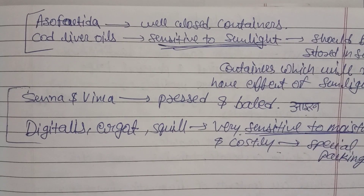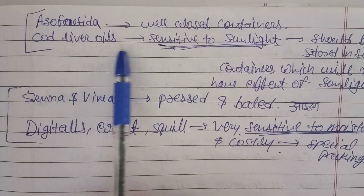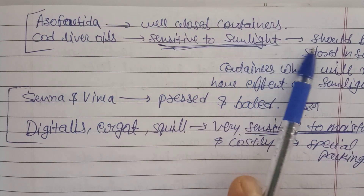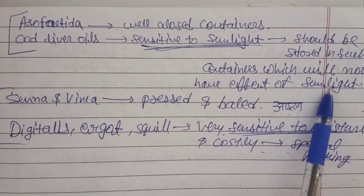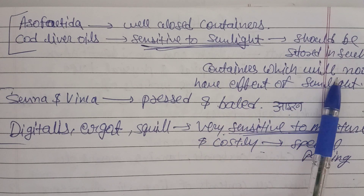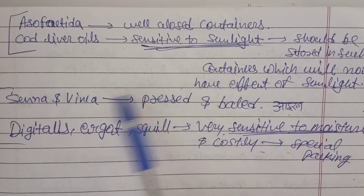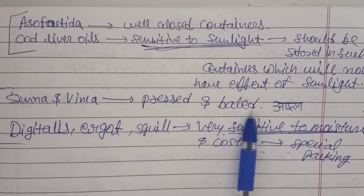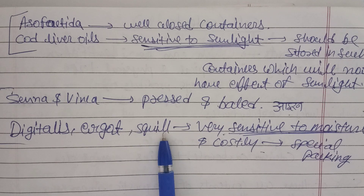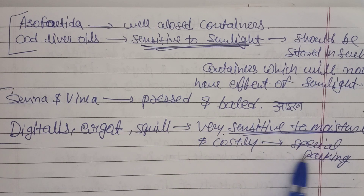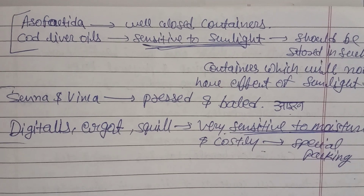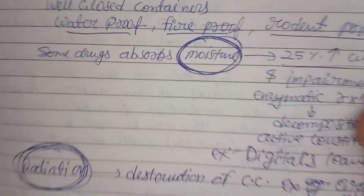The drug must pass pharmacopoeial limits — the percentage of foreign organic matter allowed is defined in the drug's pharmacopoeial monograph, and only then can it be sold in the international herbal market. For packing, opium is packed in goatskin; colophony and balsam of tolu are packed in kerosene tins. Asafoetida requires well-closed containers. Cod liver oil is sensitive to sunlight, so light-protective containers must be used.